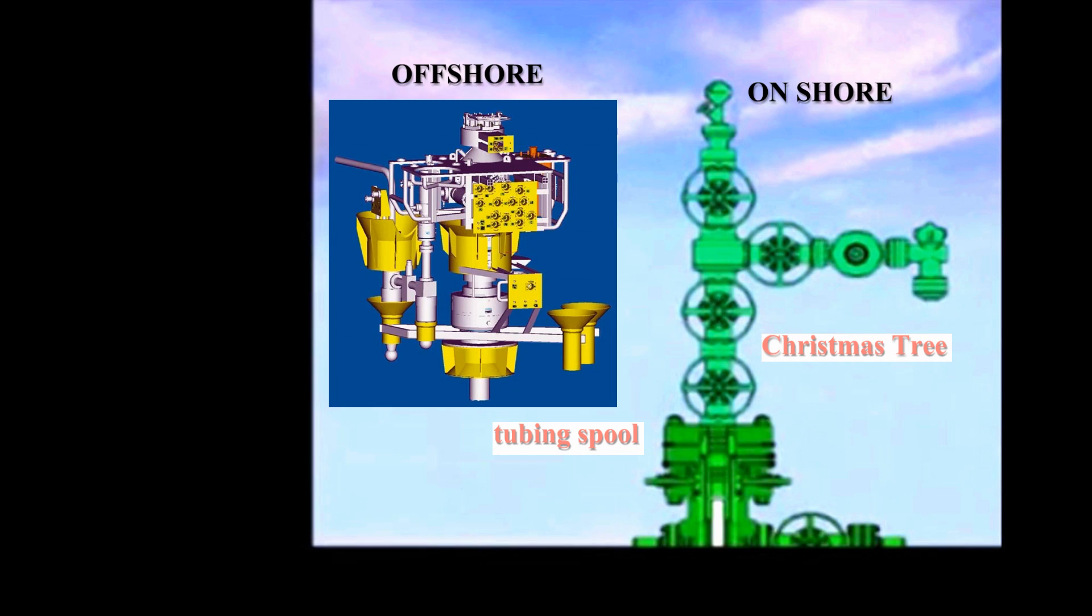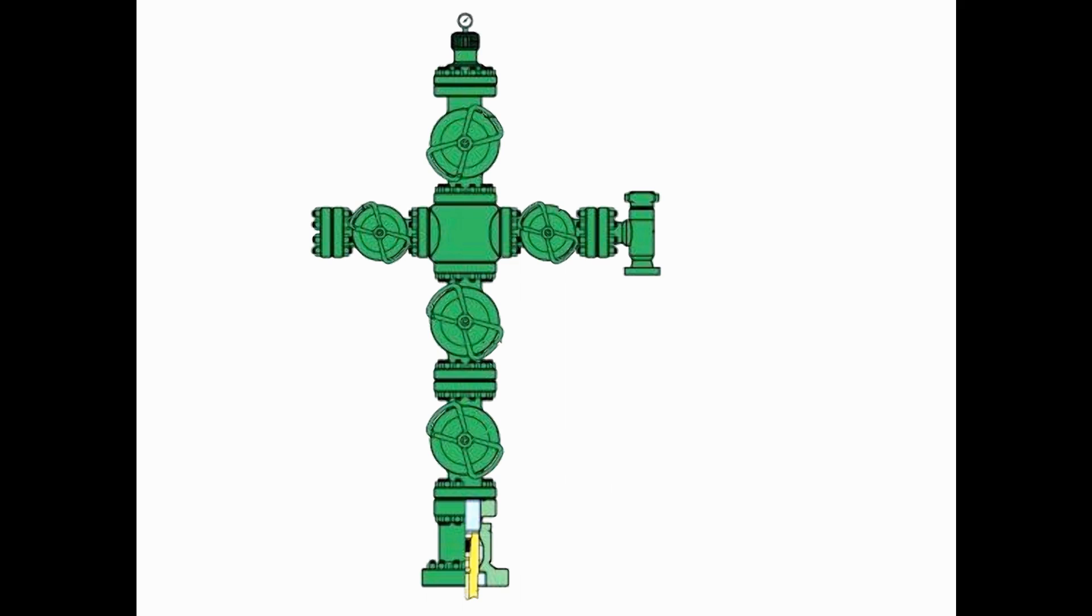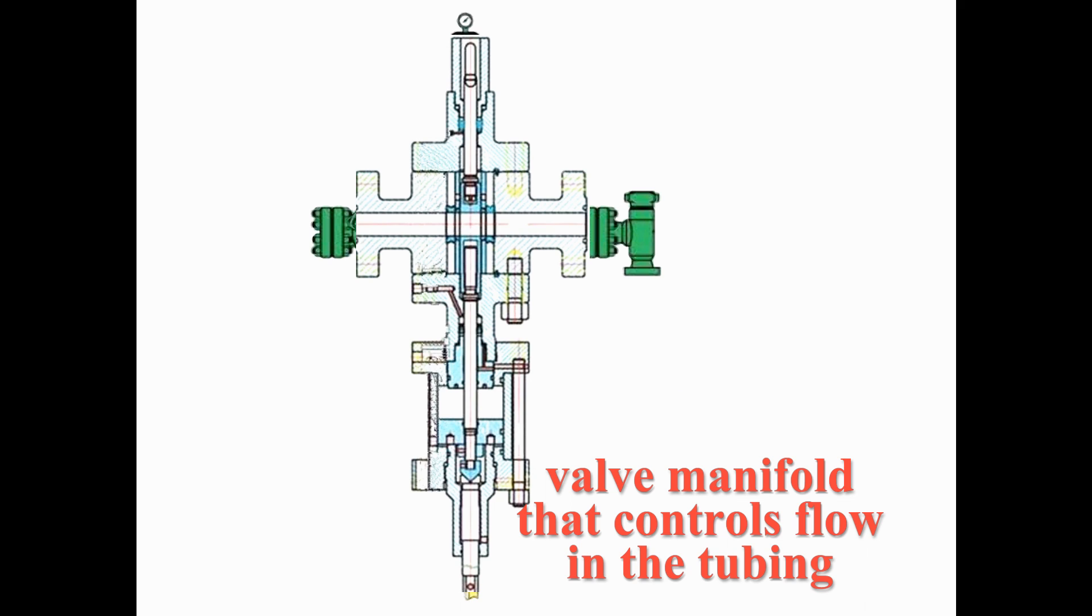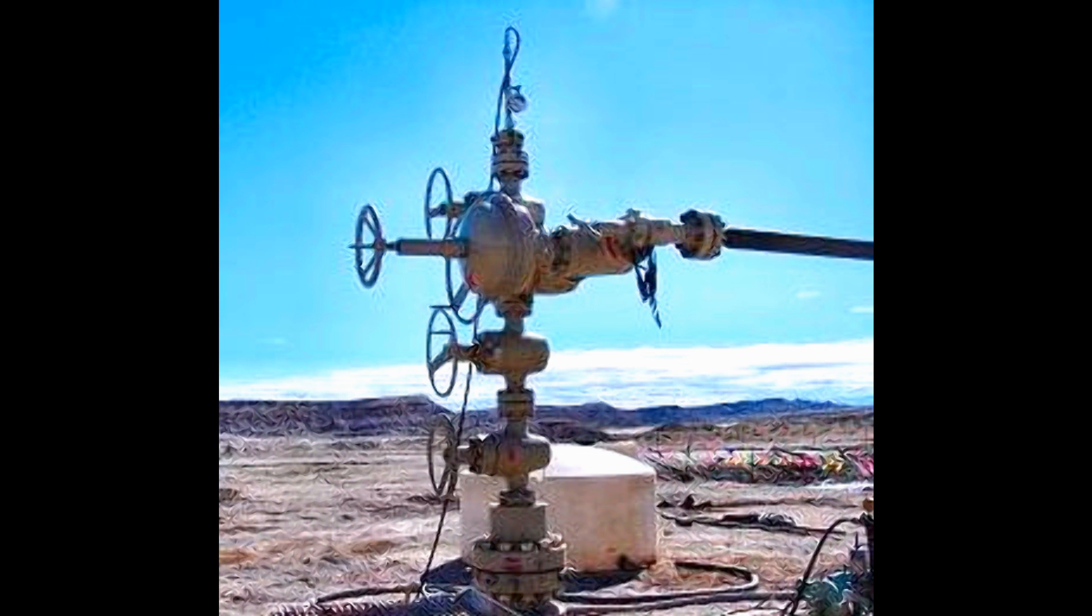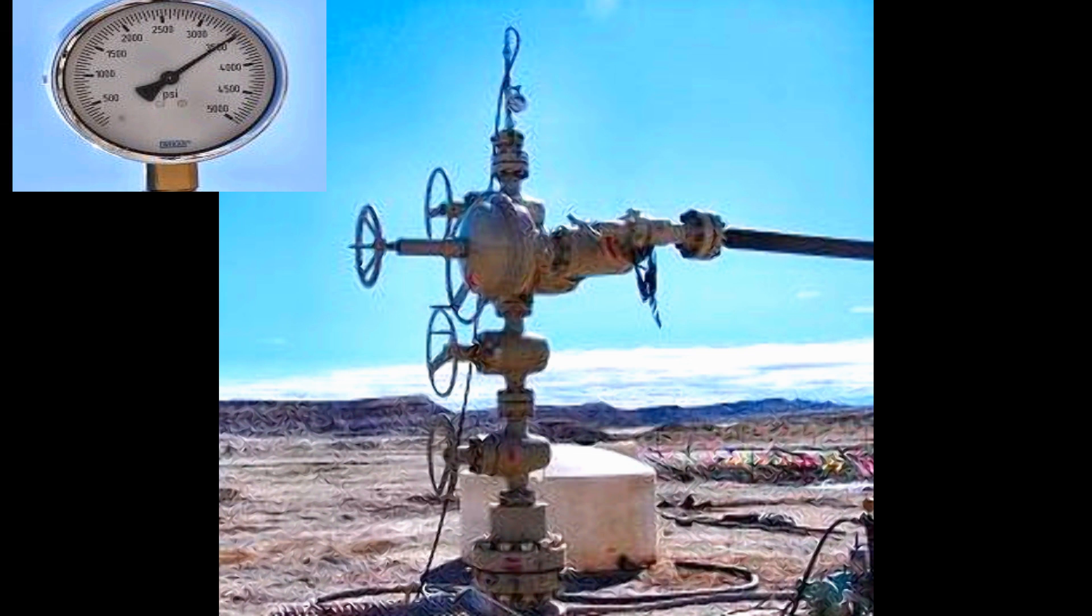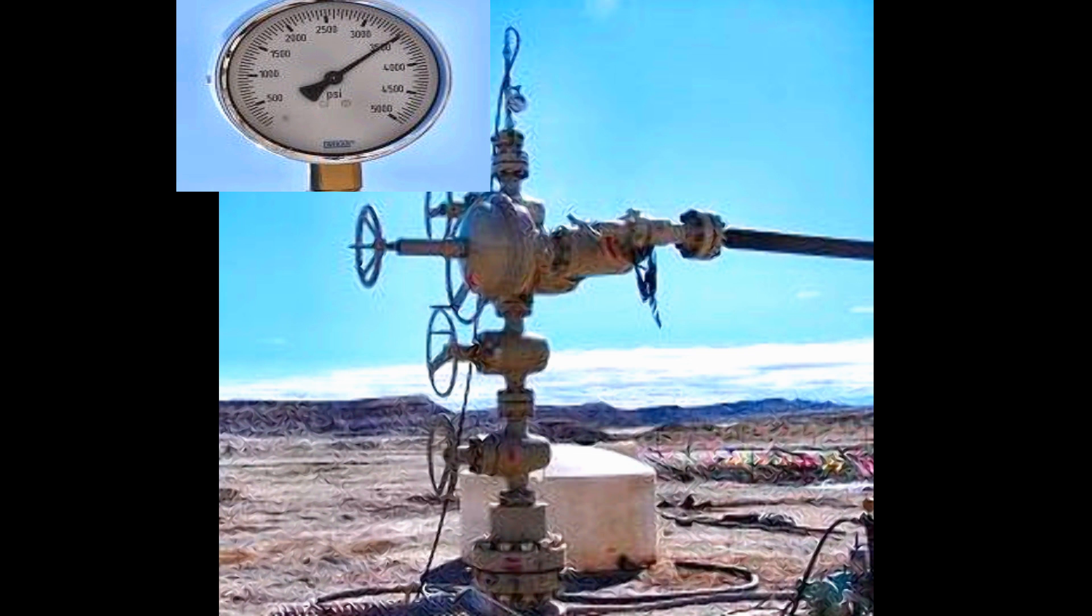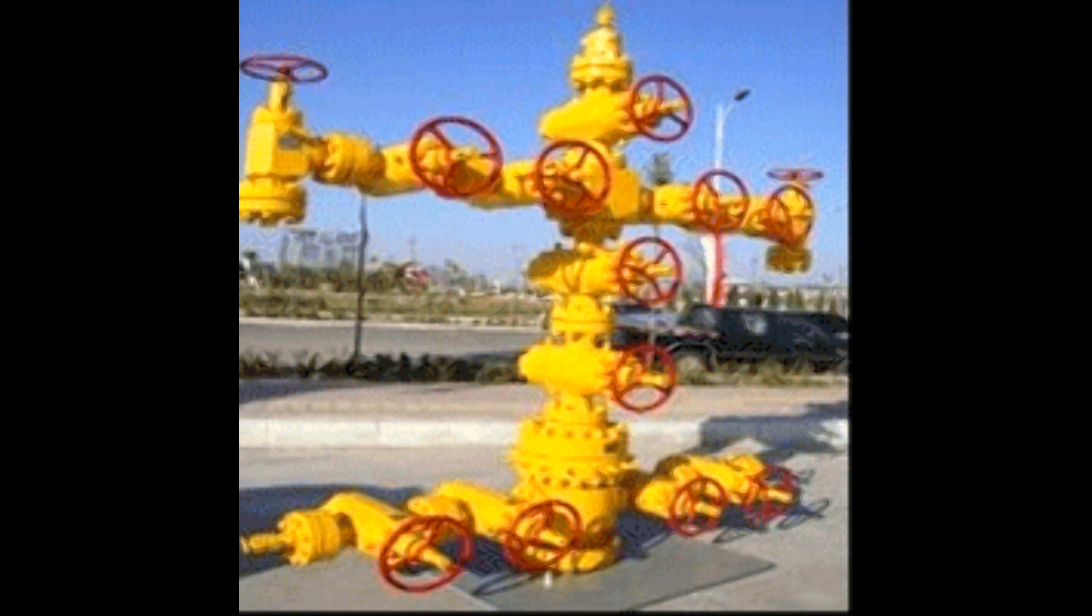Finally, a Christmas tree is installed. Containing a valve manifold that controls flow in the tubing that must be strongly constructed to contain full reservoir pressure, a Christmas tree's function is to control that pressure.